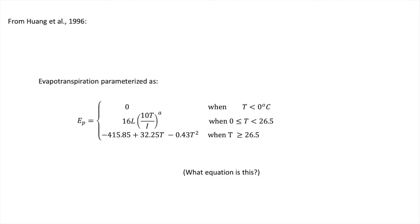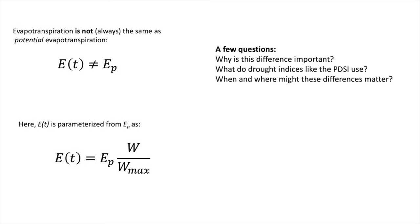Another note, something to be aware of when you're looking at both drought indices and these leaky bucket models, is that evapotranspiration at a given time is not the same thing as potential evapotranspiration. And so here, in the papers that we're covering today, evapotranspiration, the actual estimate of the evapotranspiration flux from the surface to the atmosphere, is parameterized as a function of potential evapotranspiration multiplied by W(t) over Wmax.